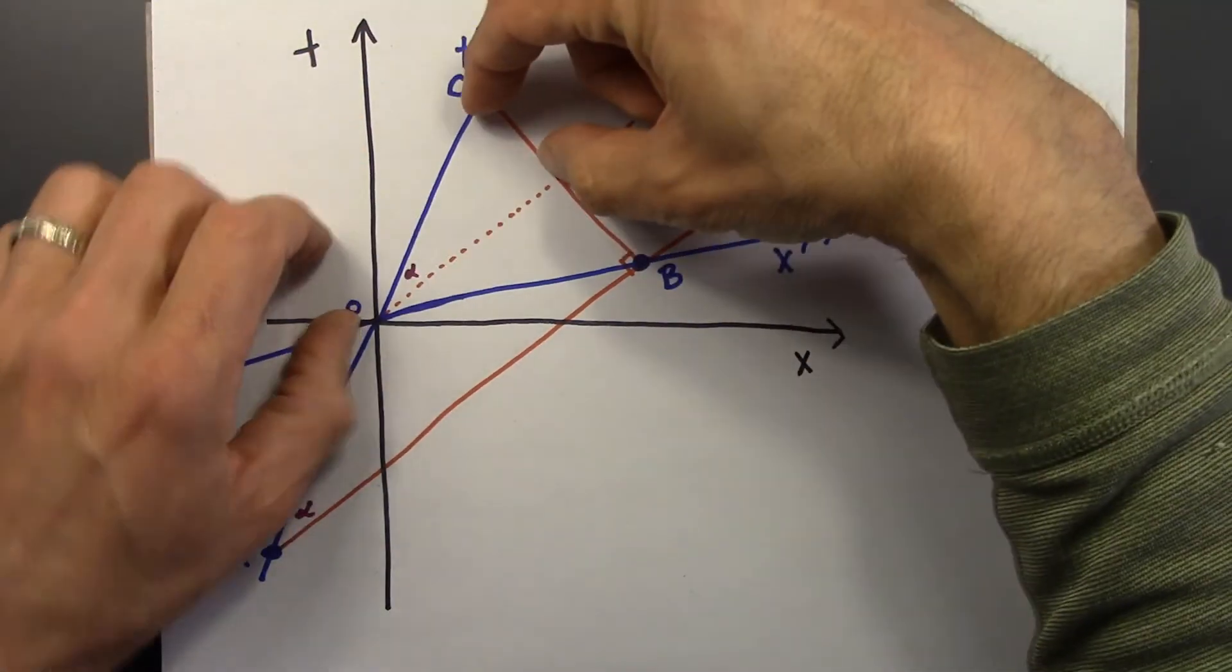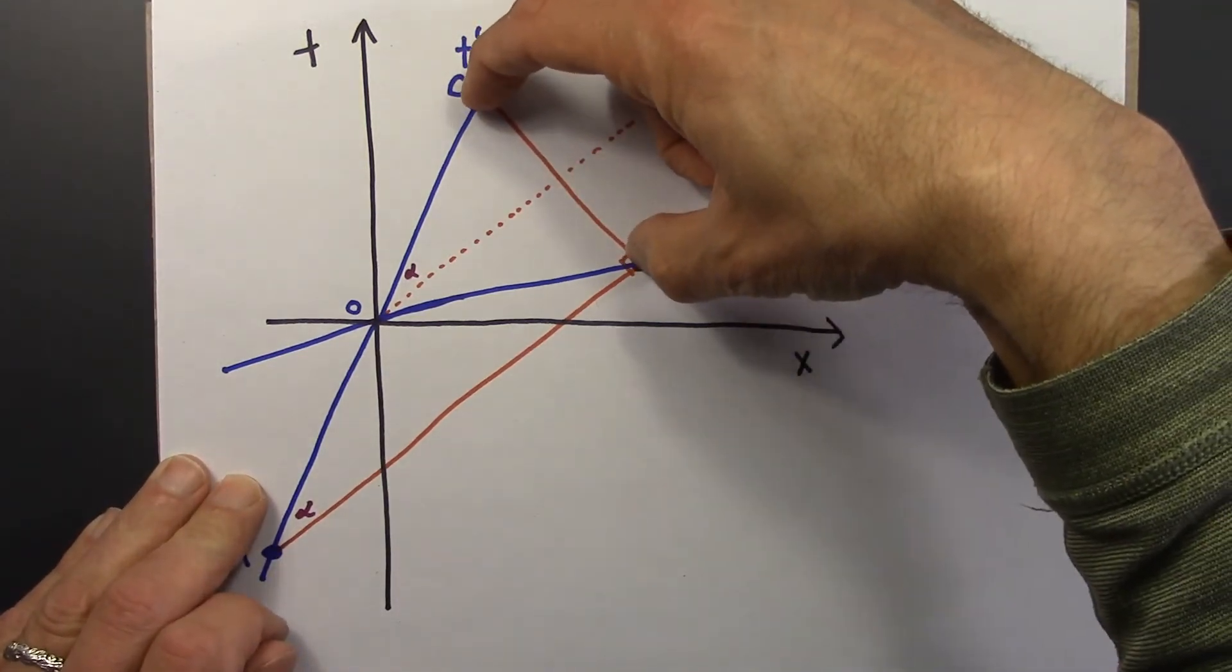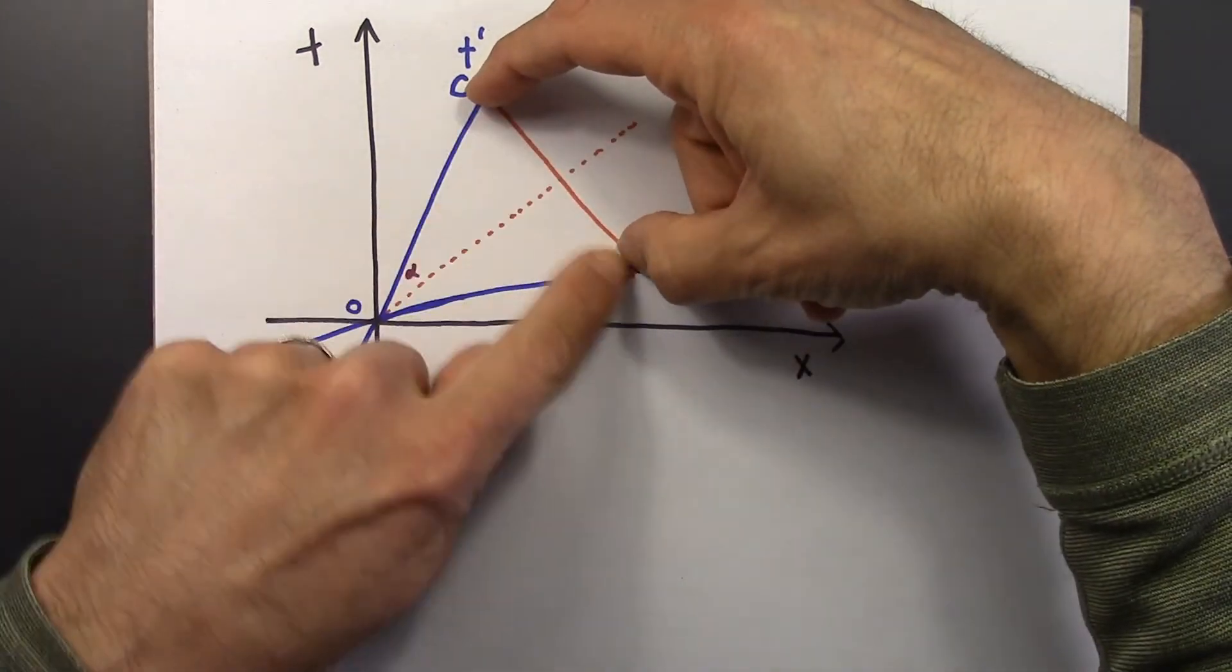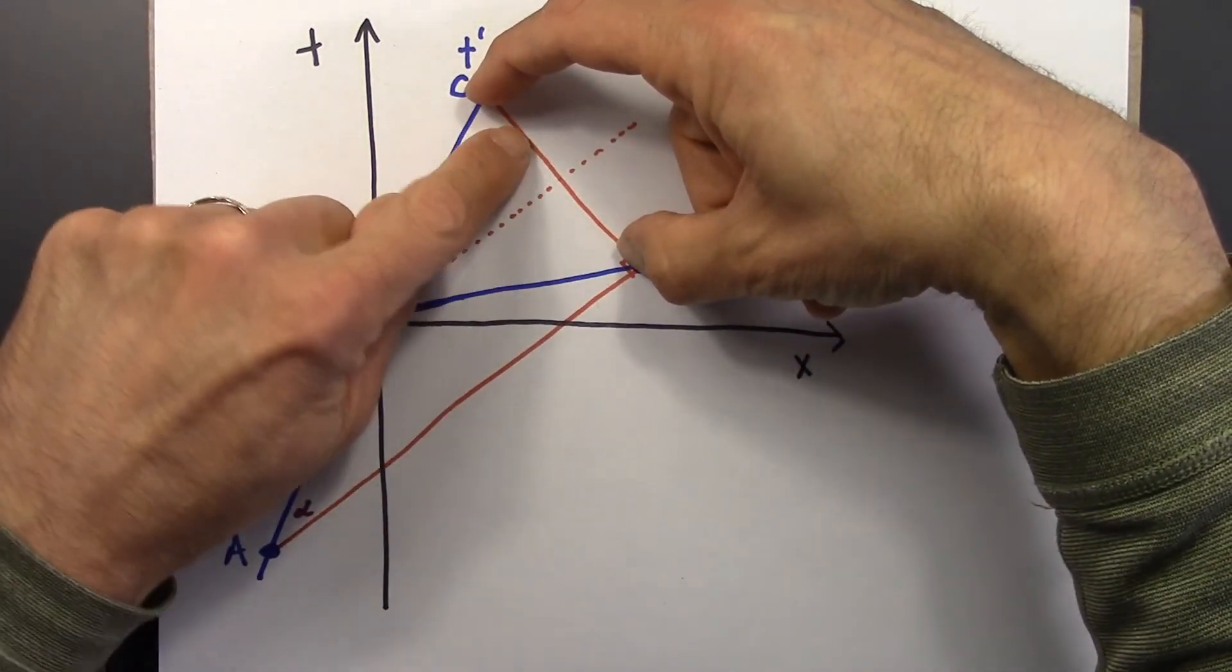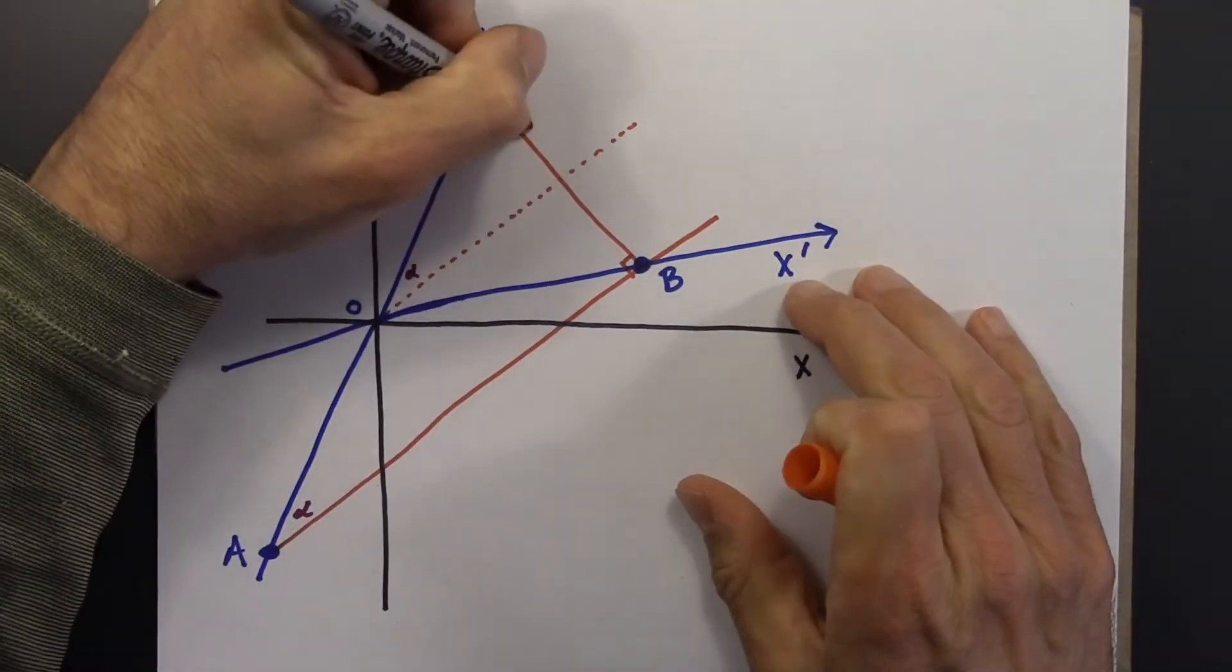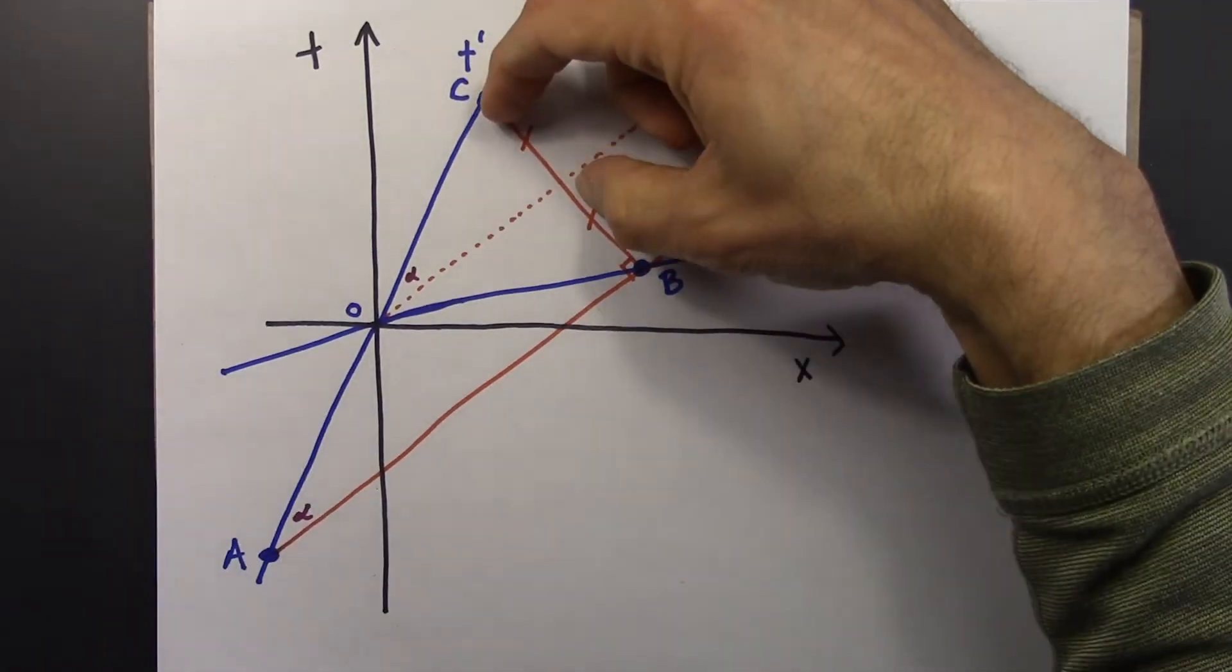That means that this is twice as big as that. So in other words, this goes right through the middle of this. If this is half, this must be the other half.